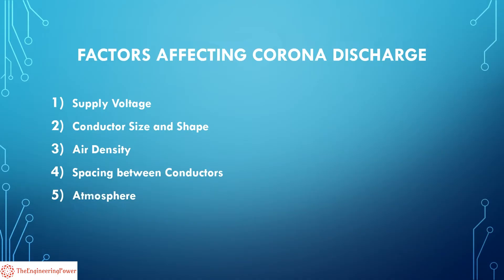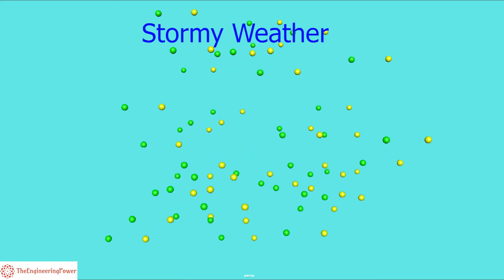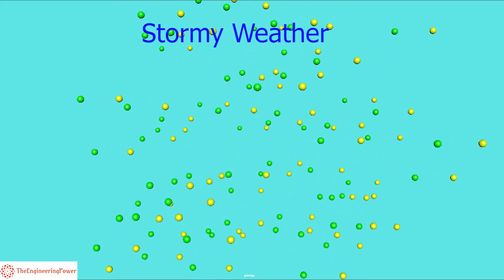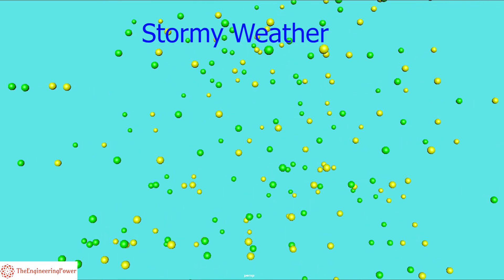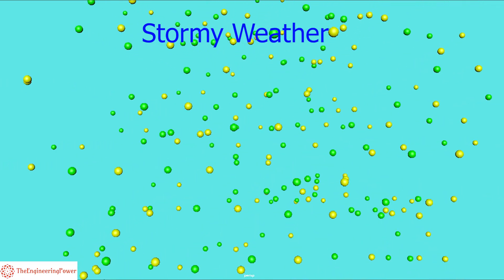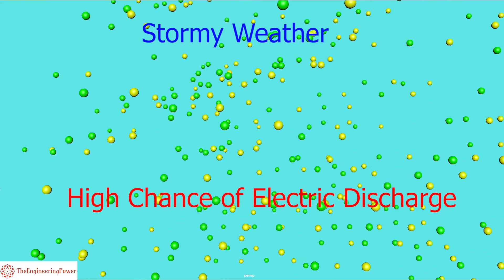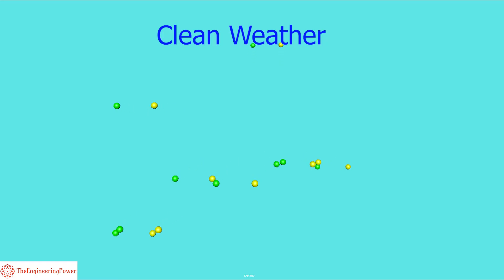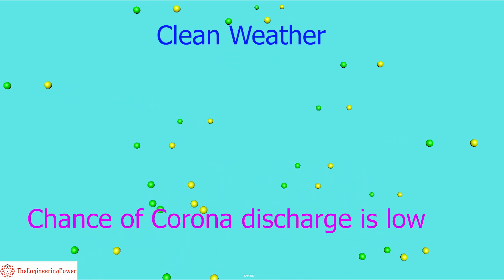Another important factor is the surrounding atmosphere. Since corona discharge occurs due to the ionization of air surrounding the conductors, it is highly affected by atmospheric conditions. In stormy weather, the number of ions surrounding the conductor is very high and there is a high chance of electric discharge, whereas in clean weather with normal airflow, the chance of corona discharge will be low.